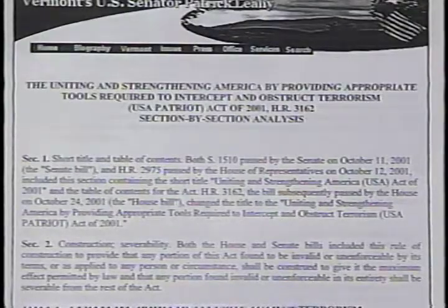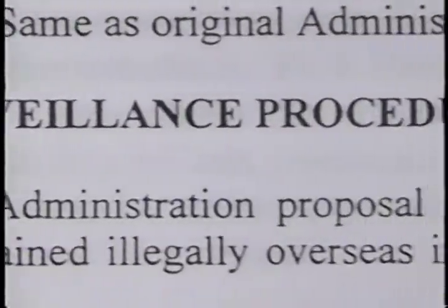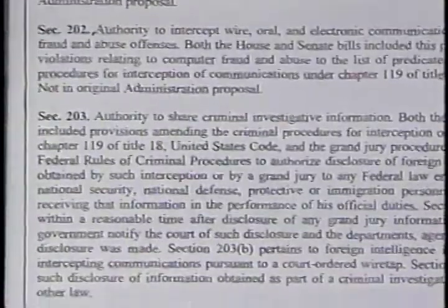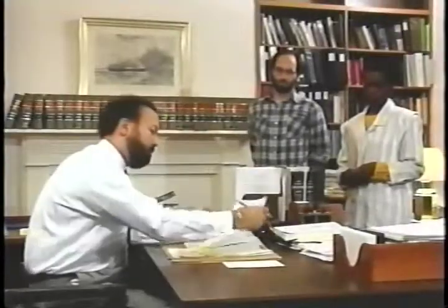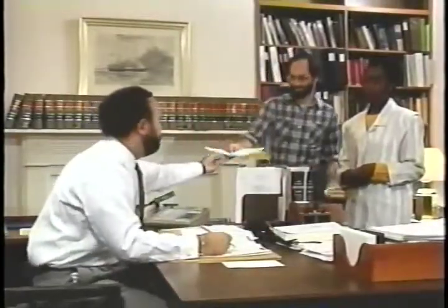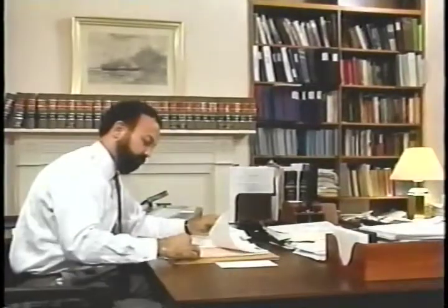The sections of the law that expand government's power to gather and share information are among the most noteworthy. Two sections make significant changes in search warrant procedure. Section 219 allows for single-jurisdiction search warrants for terrorism. Under the old law, investigators had to obtain a new search warrant in each district in which they sought to execute a warrant. Under the new law, a warrant obtained in any district where the alleged terrorist activity may have occurred may be executed anywhere in the country.